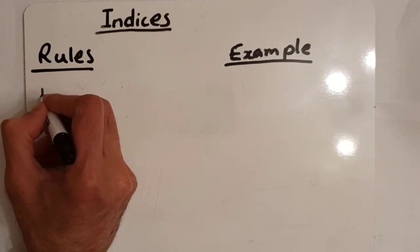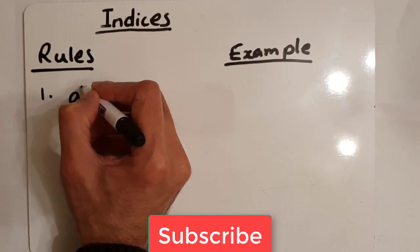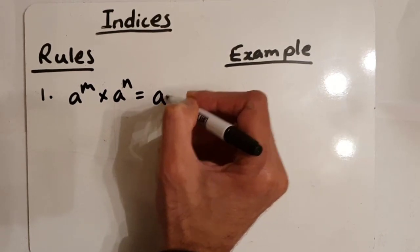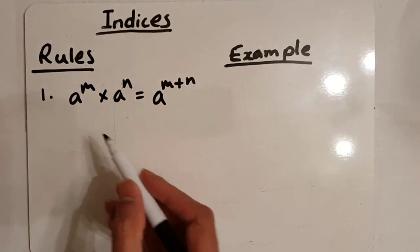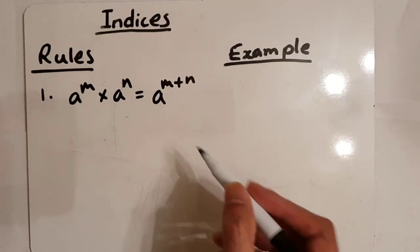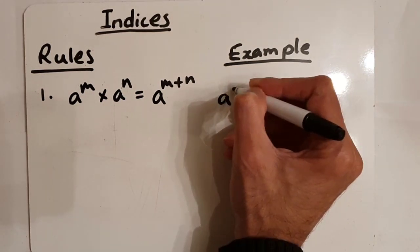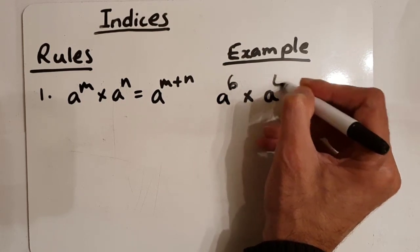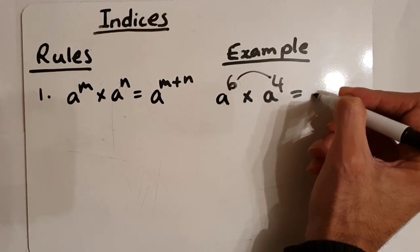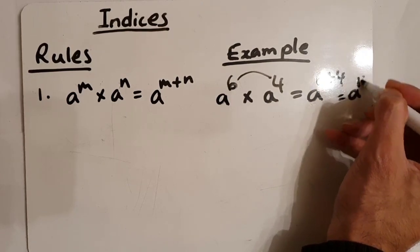Let's start off with rule number one. Rule number one is: a to the power of m times by a to the power of n will be the same as a to the power of m plus n. What that basically means is when you multiply, we add the powers. So if you have a to the power of six times by a to the power of four, we add the powers together, giving us a to the power of six add four, which is a to the power of ten.